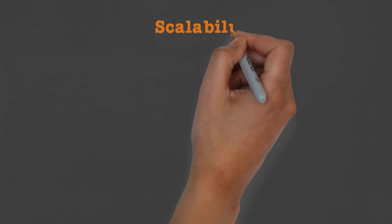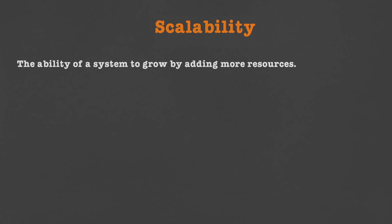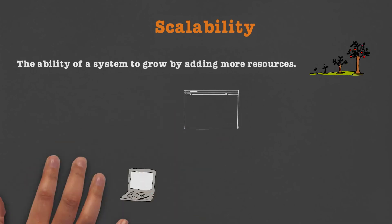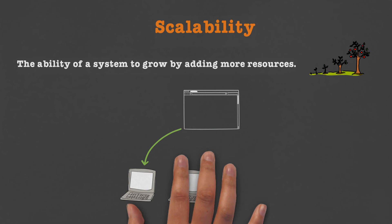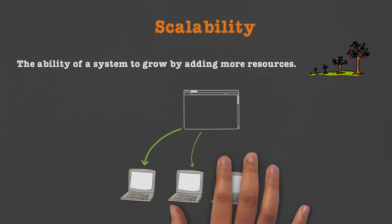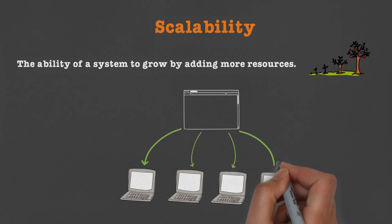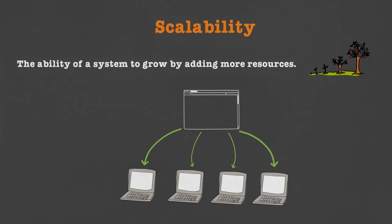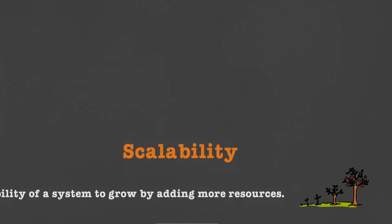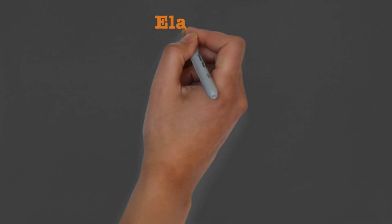Next we talk about the concept of scalability. Scalability simply refers to the ability of a system to grow by adding more resources. Think of a tree — a tree always grows; a tree never shrinks.